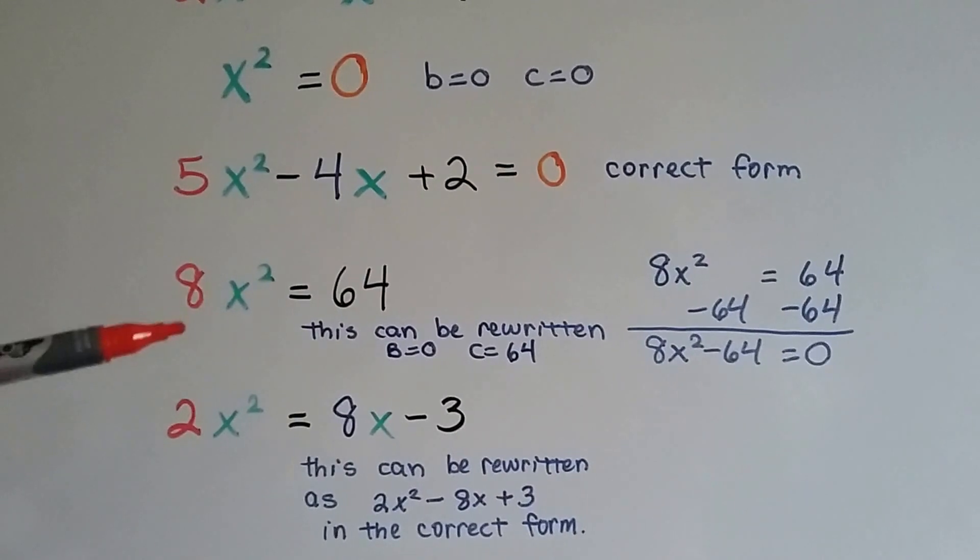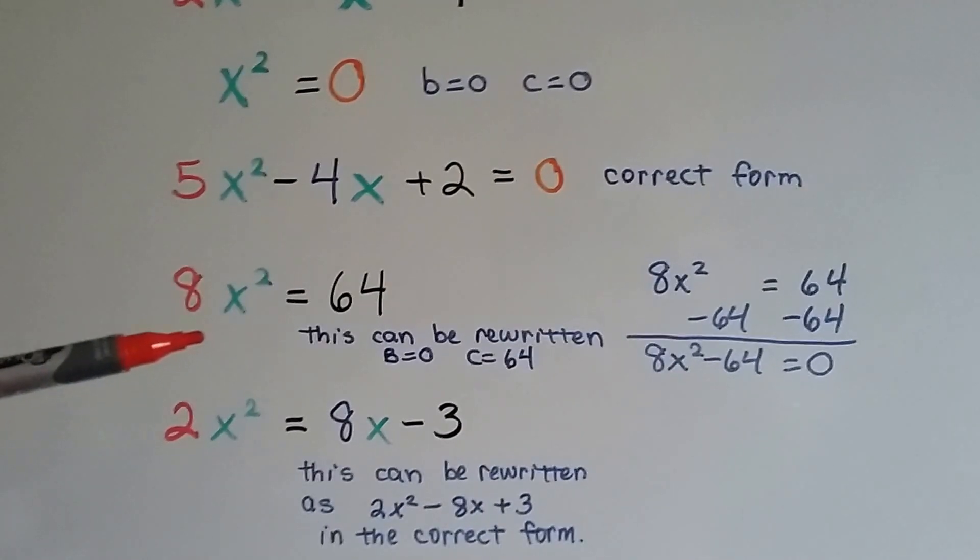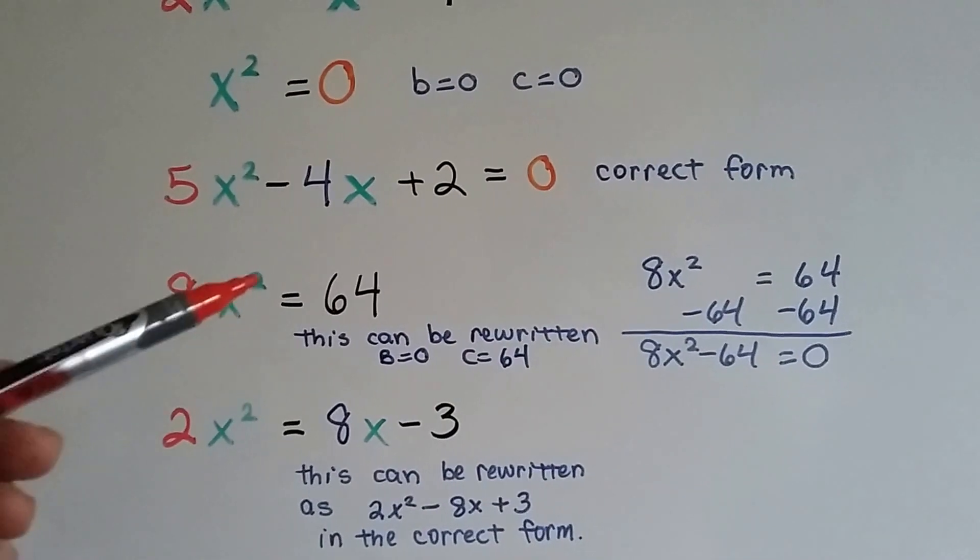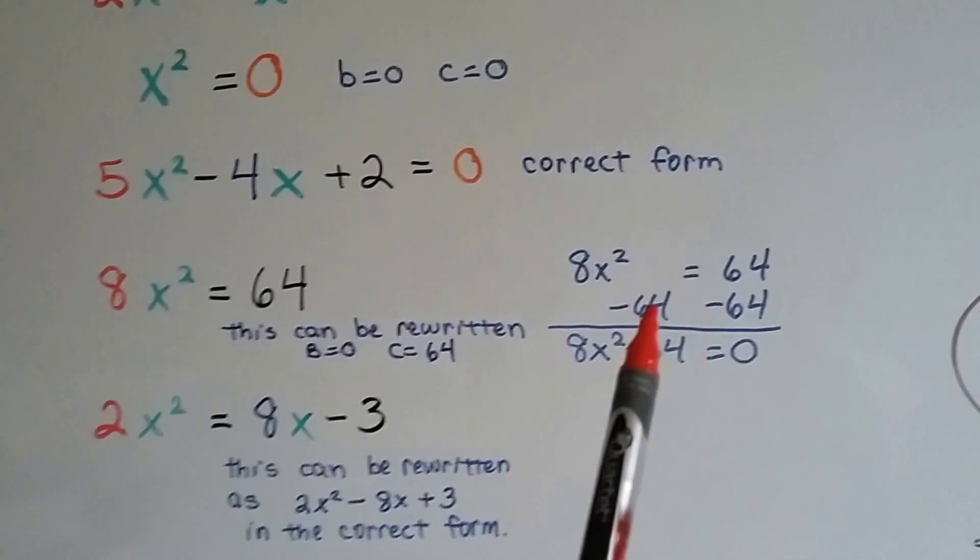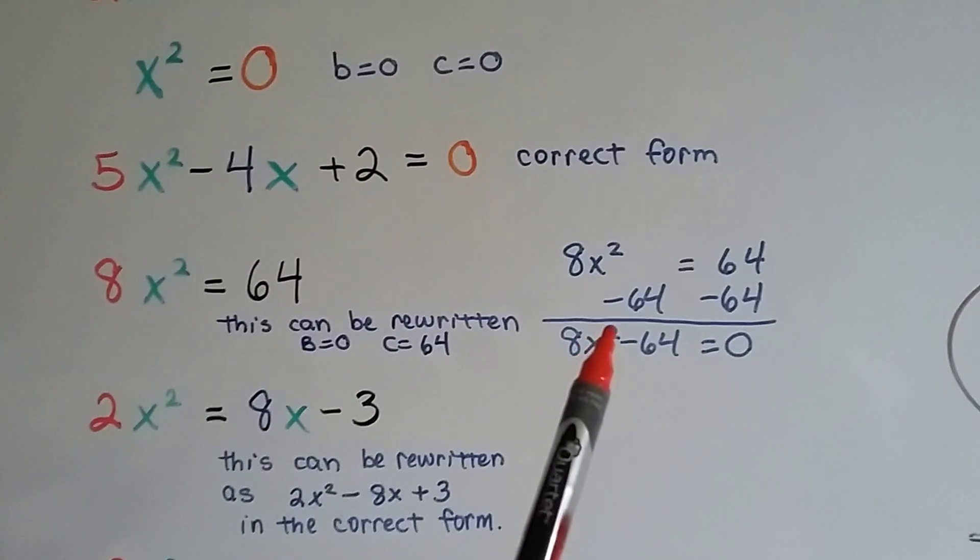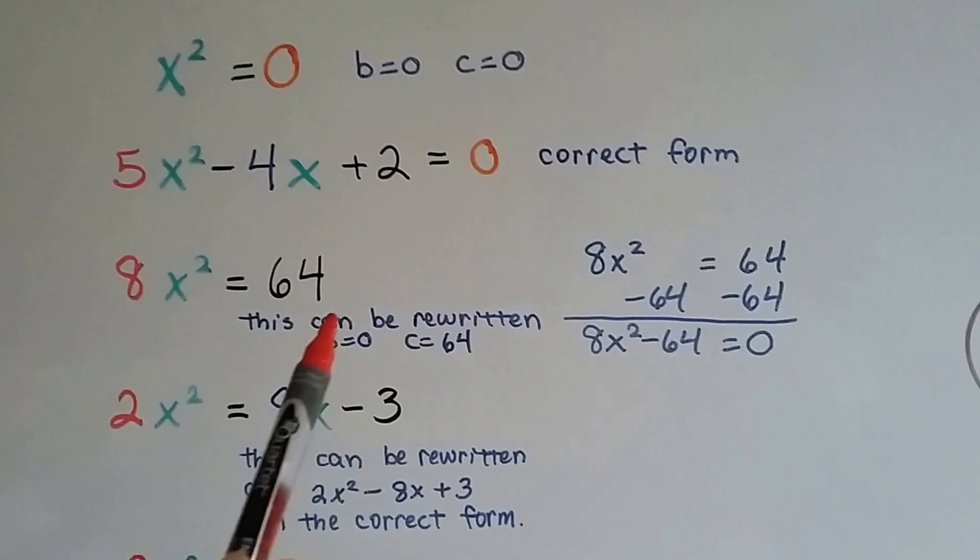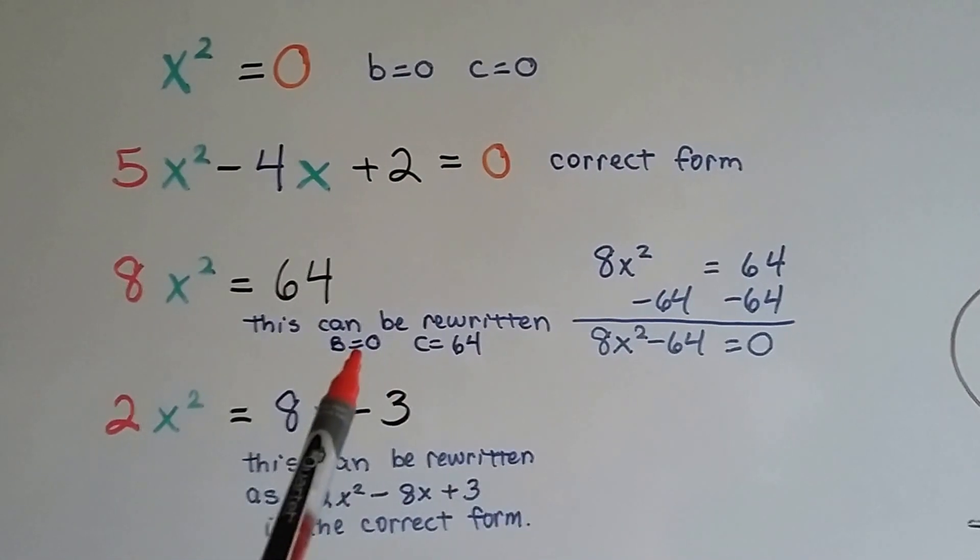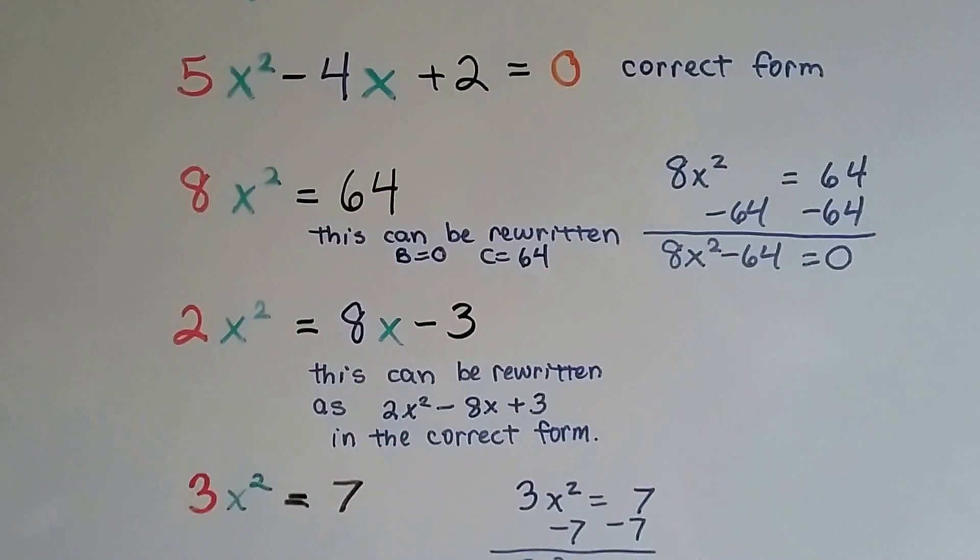This one can be rewritten. So it's in quadratic equation form. It says 8x squared equals 64. If we subtract 64 from both sides of the equation, we end up with 8x squared minus 64 equals zero. Well, that means the b value is zero and the c value is 64. See? Inverse operations.